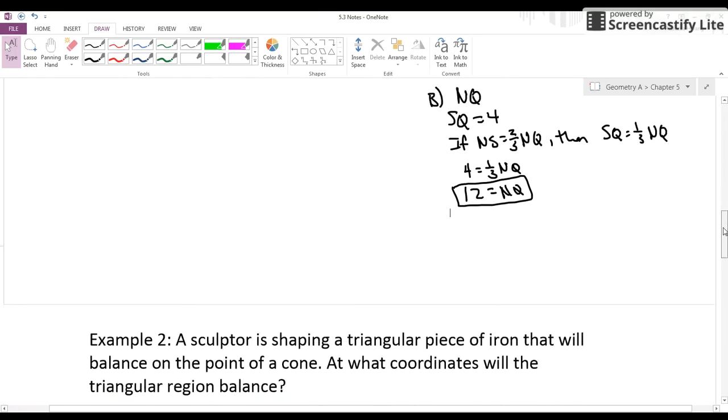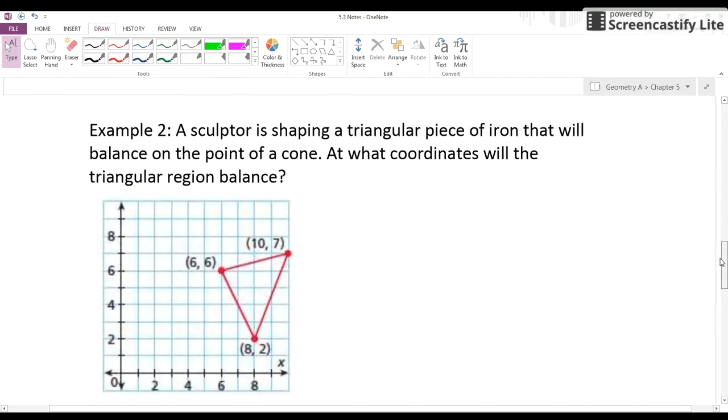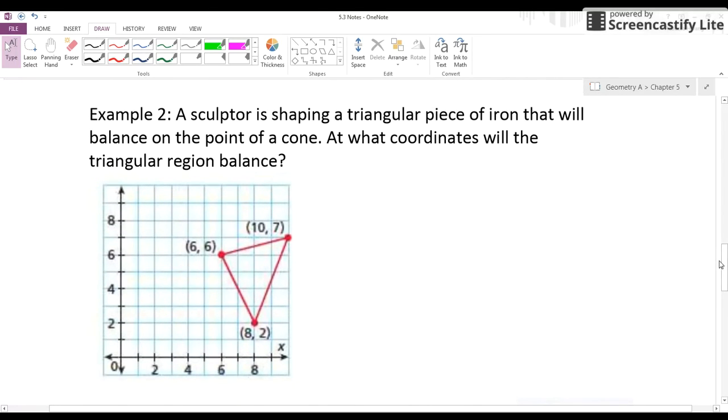Finally, let's bring us to the coordinate plane for centroid before I move on to orthocenter. Take a look at example two. A sculptor is shaping a triangular piece of iron that will balance on the point of a cone. Notice that keyword, balance.